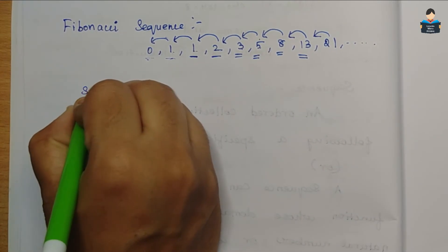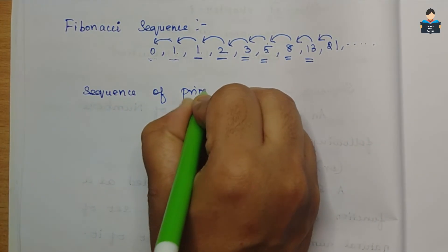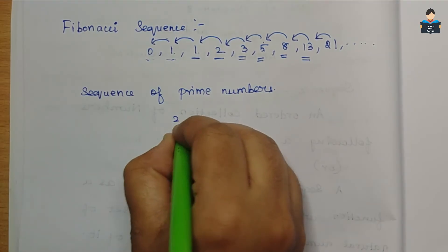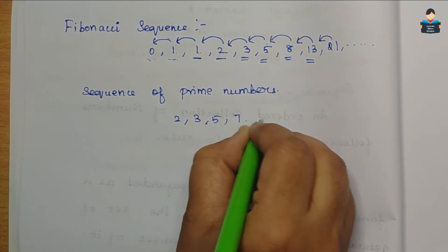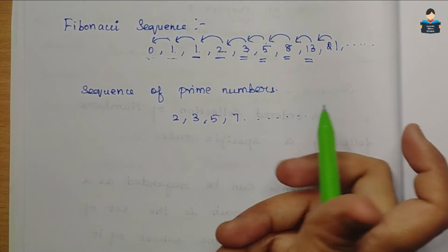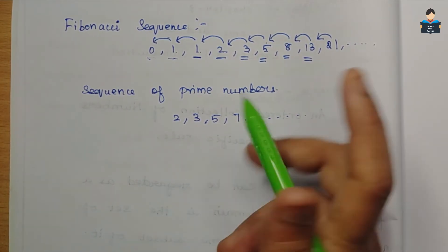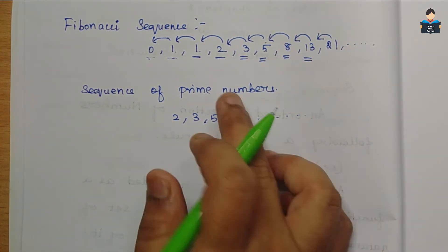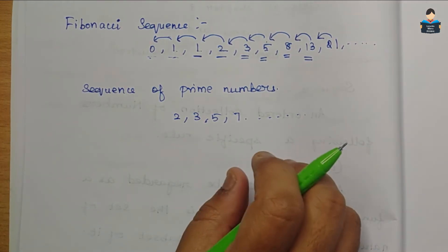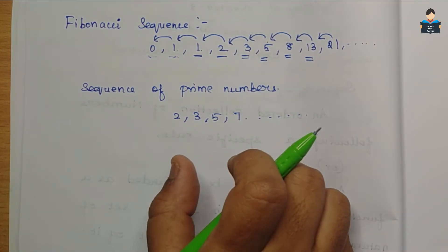Another example is the sequence of prime numbers: 2, 3, 5, 7, 11, 13... Prime numbers are numbers divisible only by 1 and the number itself. That is why we find them as a sequence. A sequence follows a specific formula or rule.